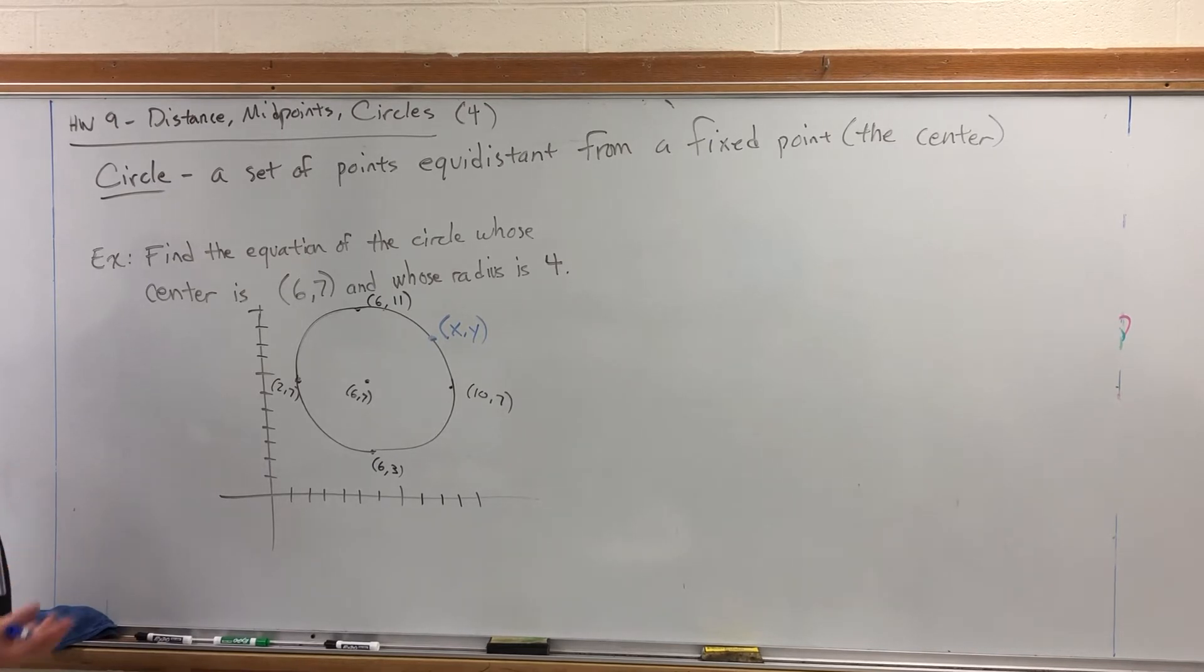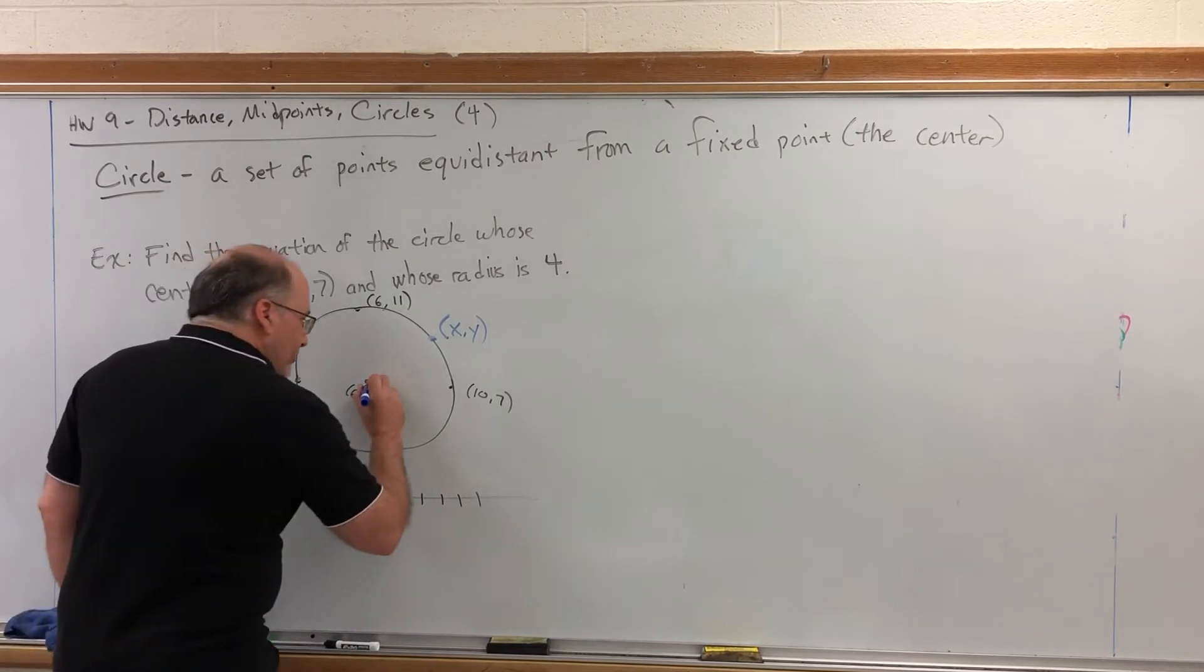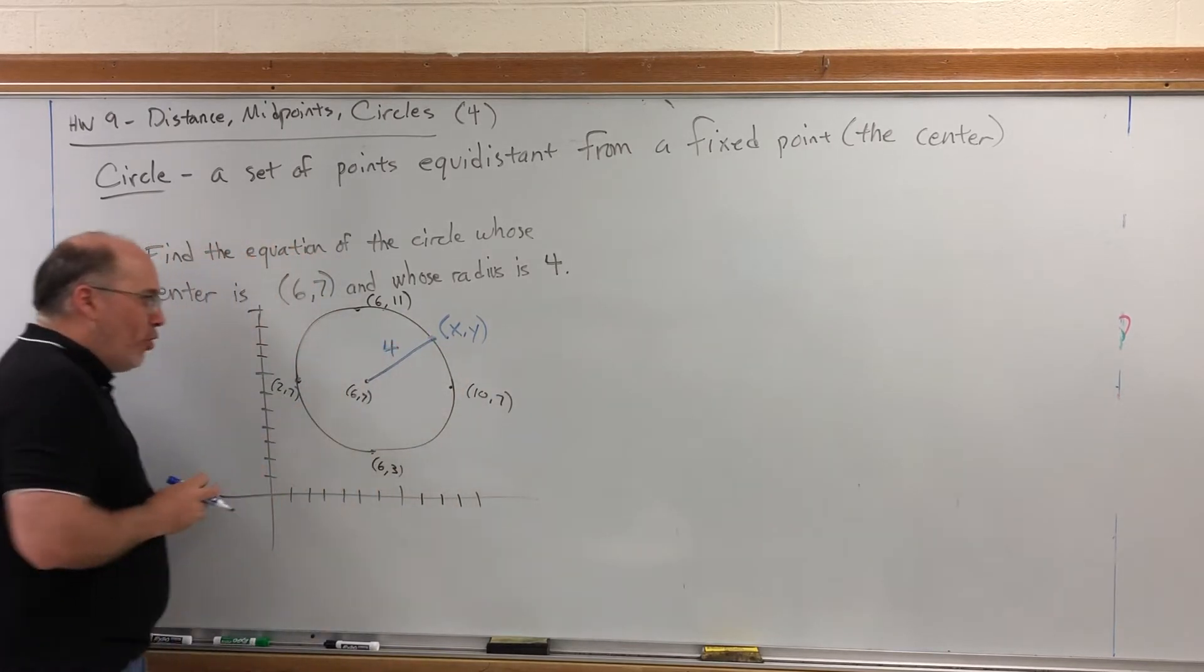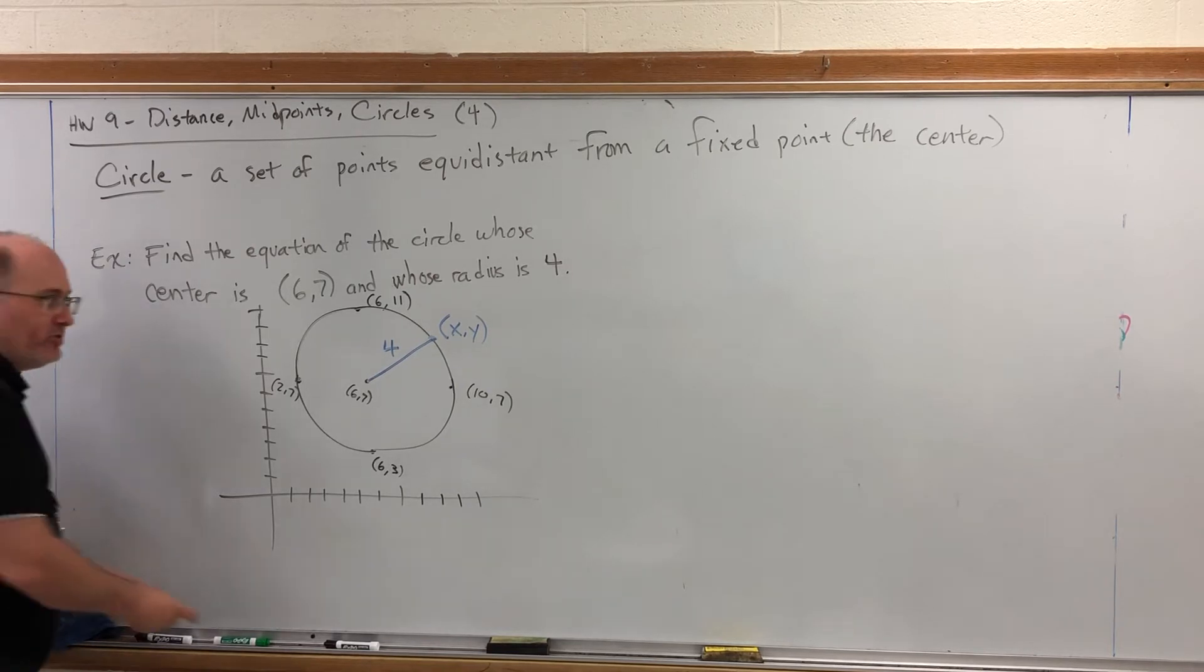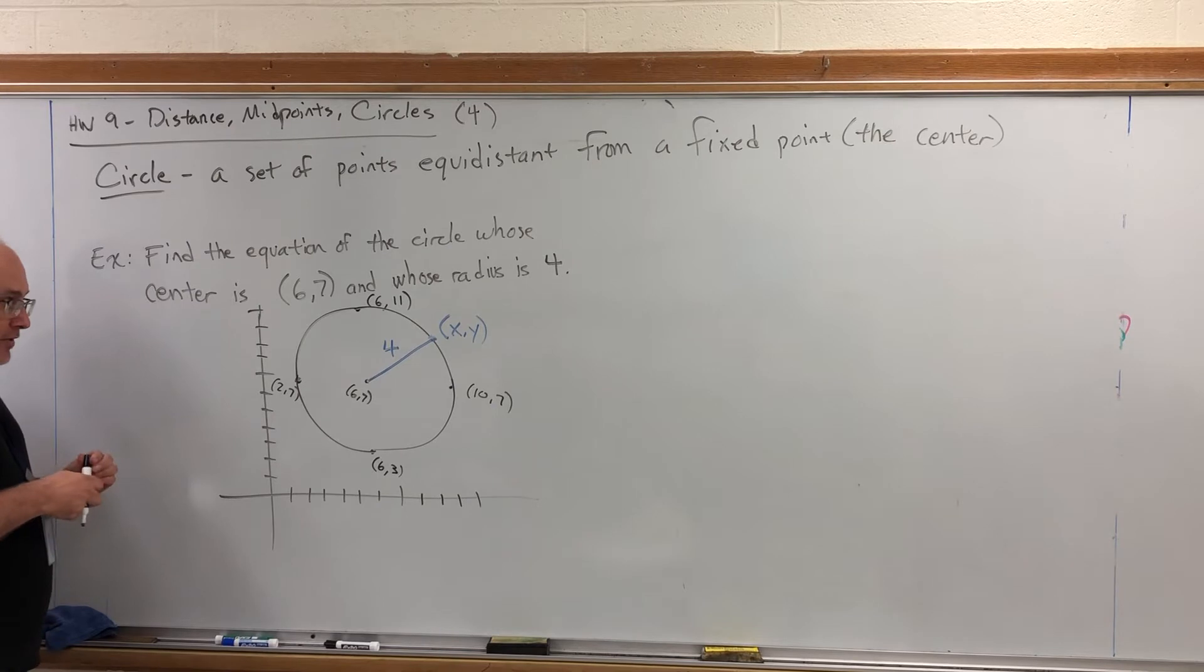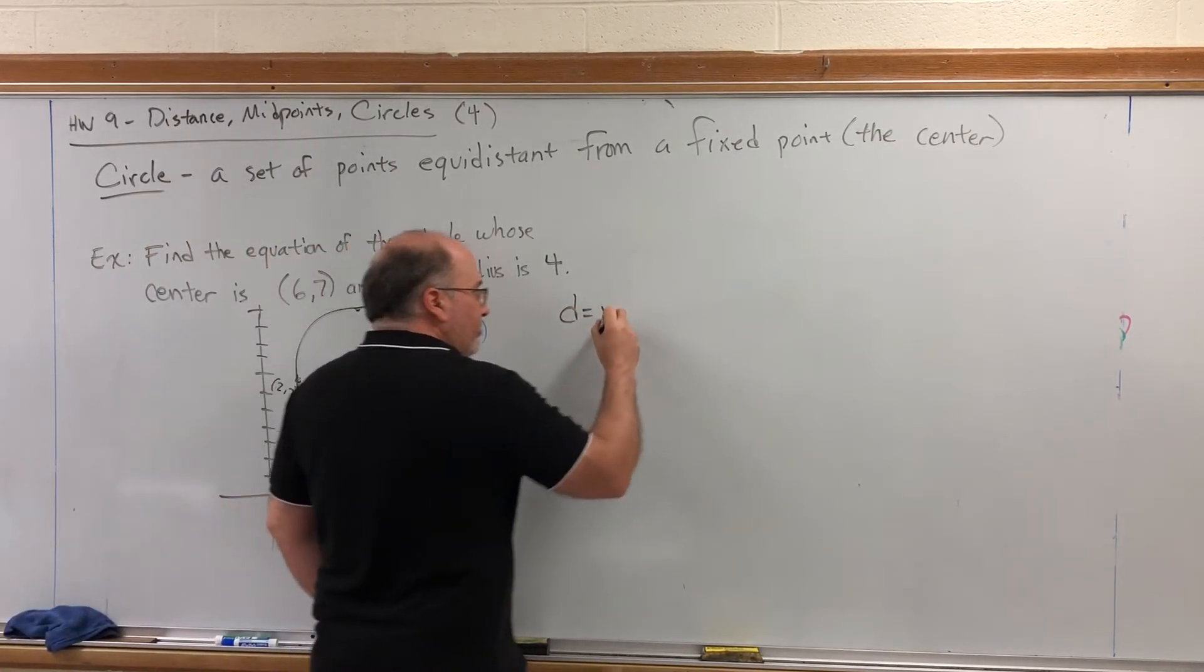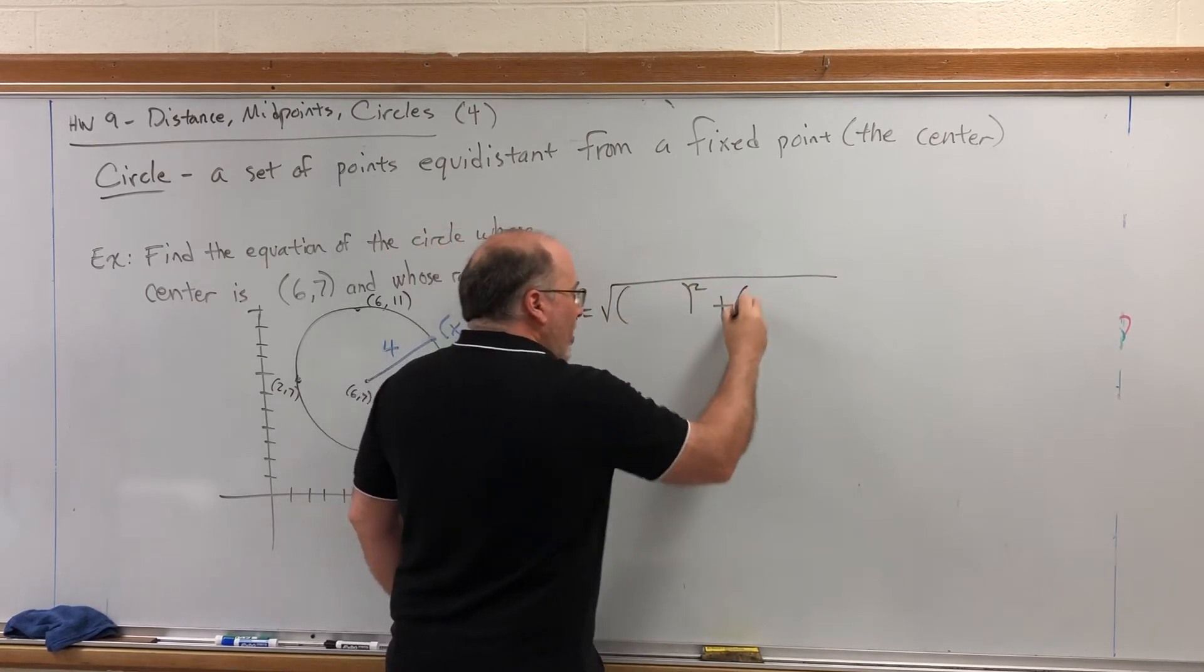what must be true in order for that point to be on the circle? Well, by the definition, you're on a circle if you're the right distance from the center. And that distance, in this case, is four. So, that means that we need this distance to be four. Wait, distance. We have a formula for distance. It was on the board previously, and I erased it.